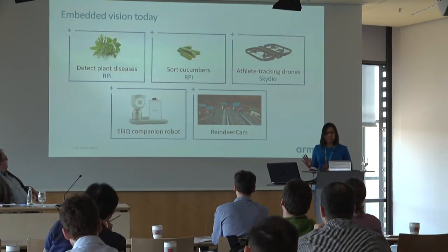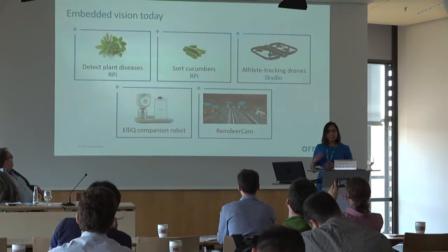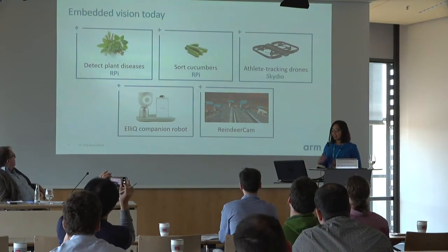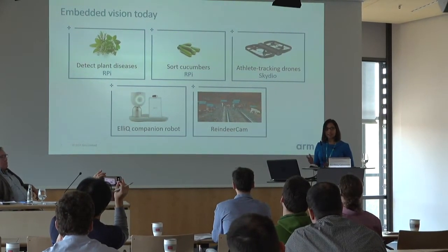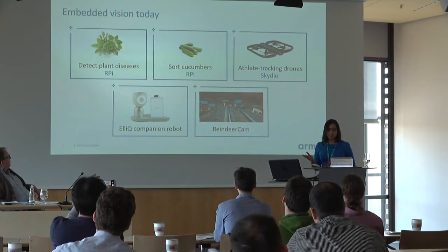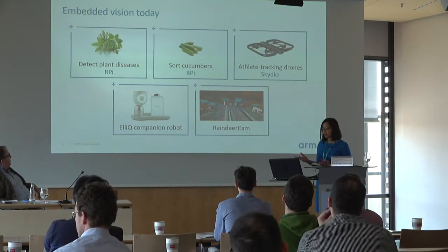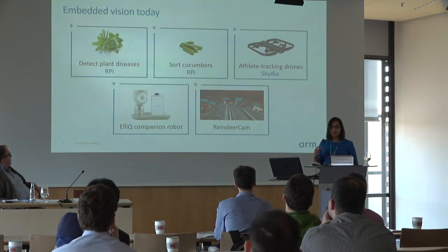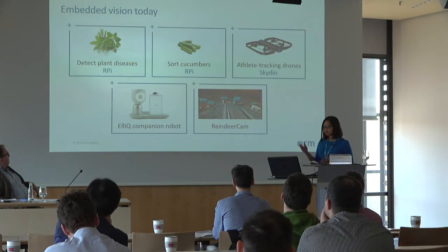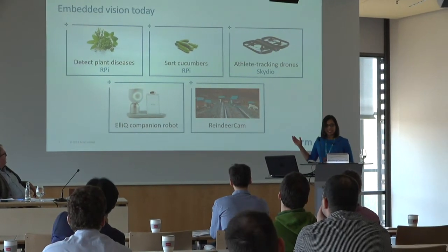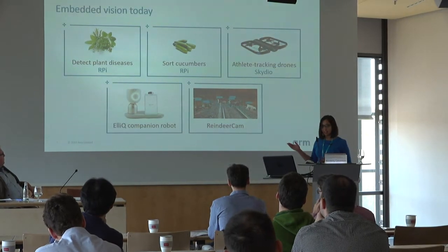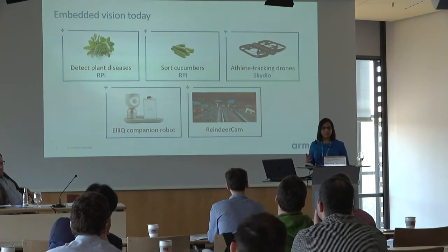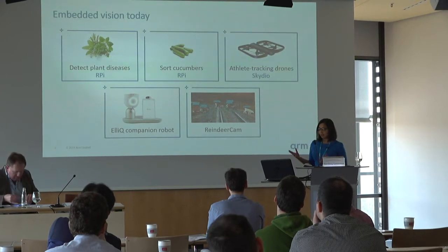Let me start with some use cases. Starting with the top left: this is a smartphone-based app that automatically detects plant diseases in cassava plants, with near 100% accuracy in detection. Then here is a Raspberry Pi-based device, so based on ARM processor, which will automatically detect a cucumber plant so that farmers can really save time and effort.